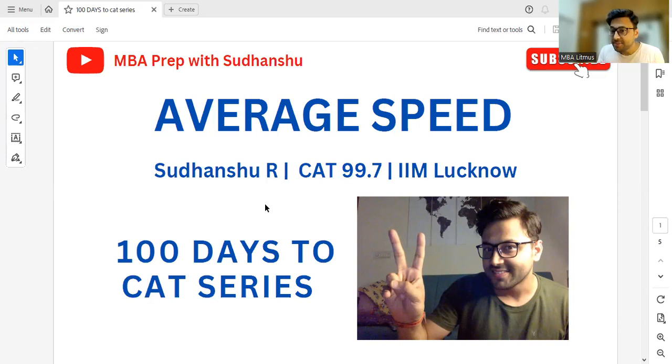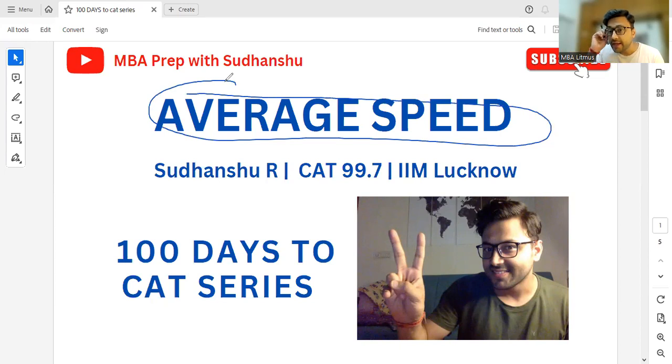100 days to CAT series. In the fifth part, we are talking about one very important aspect which is called average speed. In the last many years, we've seen a lot of questions from this topic, and hence it forms a very important aspect of time, speed, distance. Average speed, which is given as total distance upon total time, has a few scenarios which are very important from a CAT standpoint, and that is something which we are going to talk about today. So let's begin our discussion.